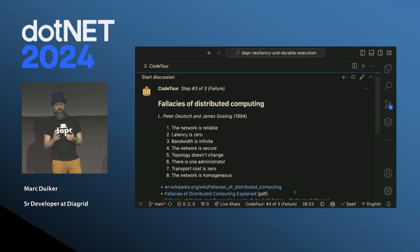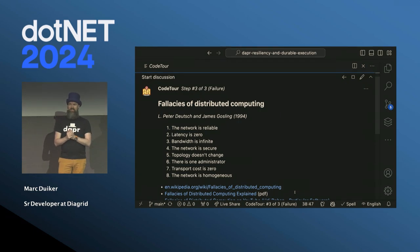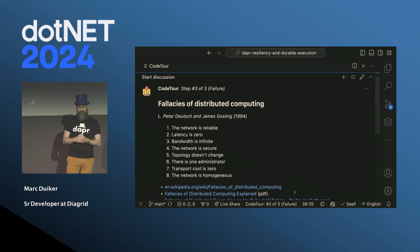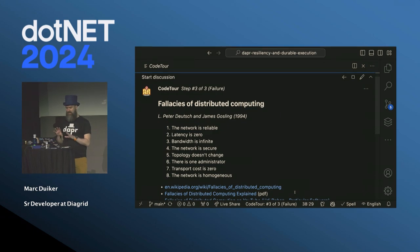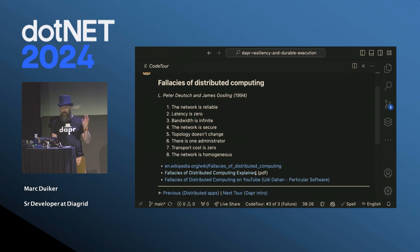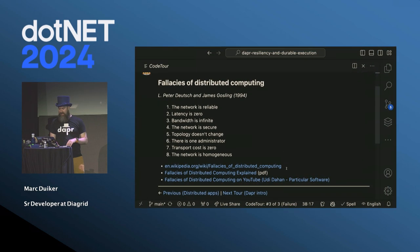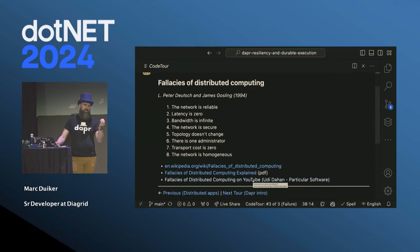We've been doing distributed computing for quite a while, and there's quite a bit of knowledge around that. The 'fallacies of distributed computing' list has been out there since 1994, compiled by Peter Deutsch and James Gosling. It lists statements which are not true, but people either think they are or don't put in enough time to figure out what they mean for distributed systems. I highly recommend the YouTube playlist by Udi Dahan from Particular Software — five minutes per fallacy.